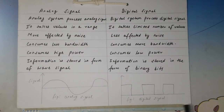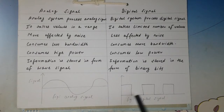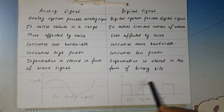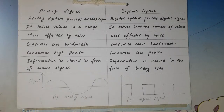In a digital signal, the key distinction is that the value cannot go below zero — it must always be at or above zero. If the signal goes below zero, it becomes an analog signal.